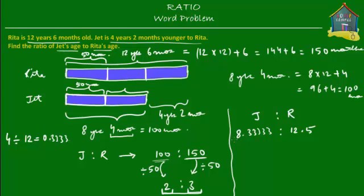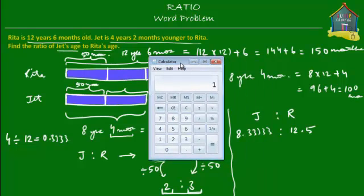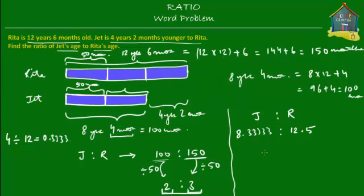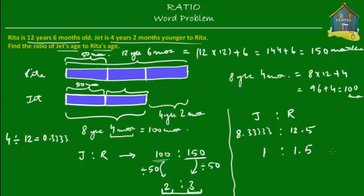Now when you have a ratio that has got decimals in it, then the best thing to do is to simply take a calculator, then you put 12.5 here, which is the bigger of the two. You put 12.5 and you divide by the smaller number. The smaller is 8.333333, let's see what we get. What we get is 1.5000006. So what that means is that if this is equal to 1, then this would be 1.5.